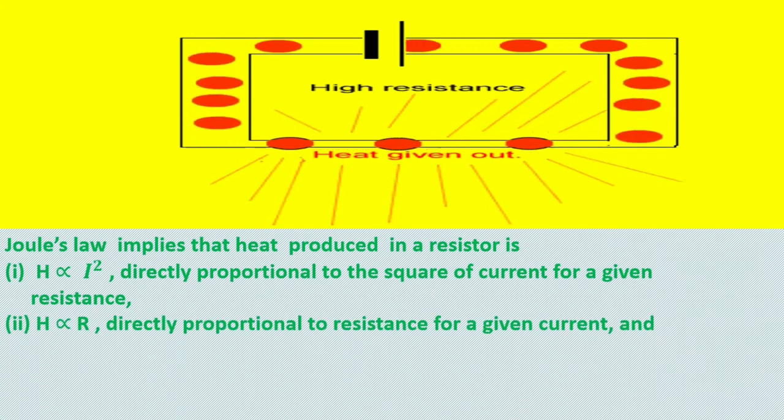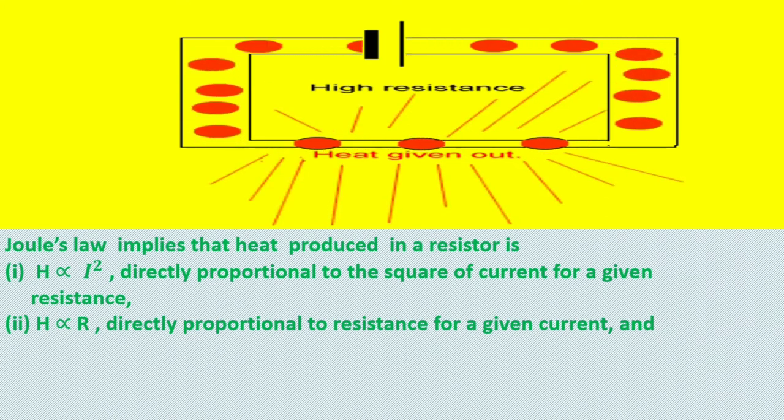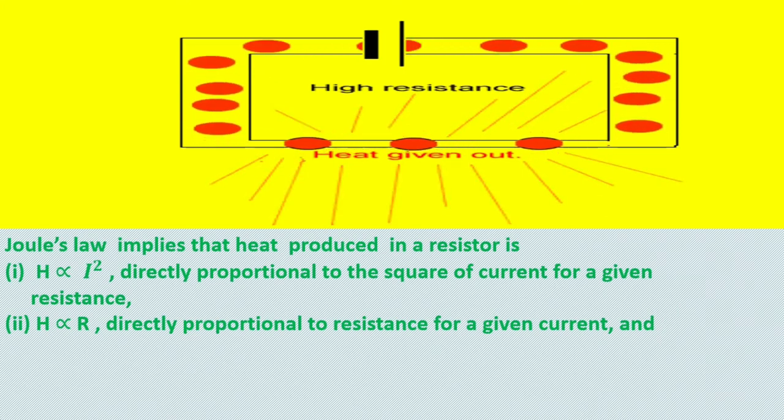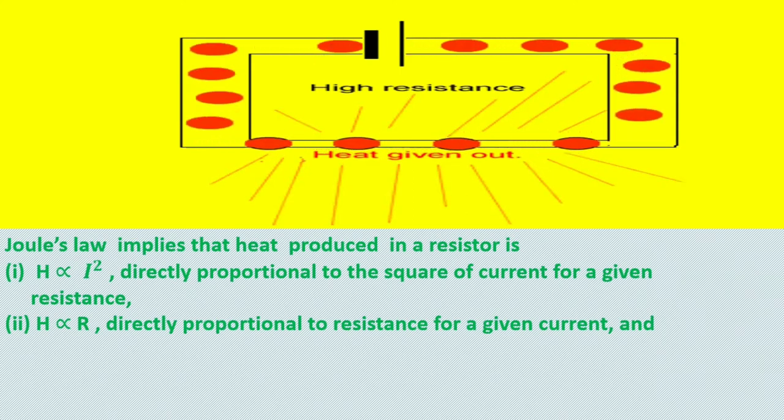It is directly proportional to resistance for a given current. If the resistance for a given current in the resistor is more, more is the heat produced and vice versa.